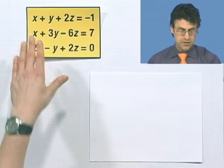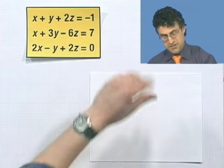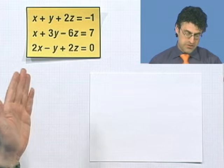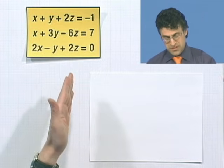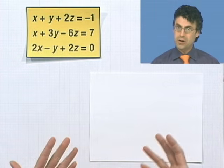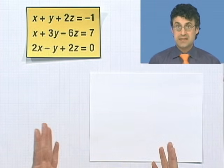So here are the three equations: x plus y plus 2z equals negative 1, x plus 3y minus 6z equals 7, and 2x minus y plus 2z equals 0. Now we're going to follow the same systematic approach that is given by the Gauss-Jordan method.